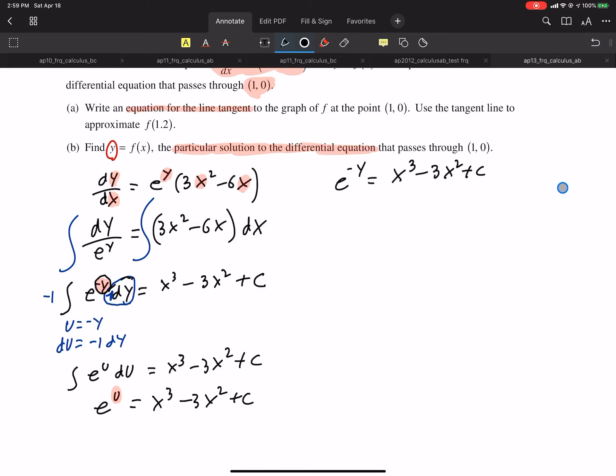Now, the c here, that's a problem. We need to find the value of c. But the good news is they told us it goes through (1, 0). So I'm going to plug that into my equation. And I'm going to get e^(-0) equals 1³ - 3(1²) + c. 1 equals 1 - 3 + c. And I get c equals 3. Is that right? I don't think that's right because the answer is different. Let me see. I think I have an error somewhere. If someone can see my error, that would be muy bueno.